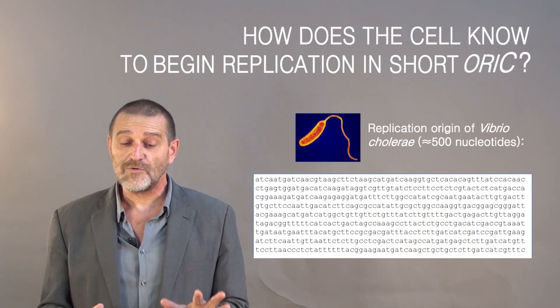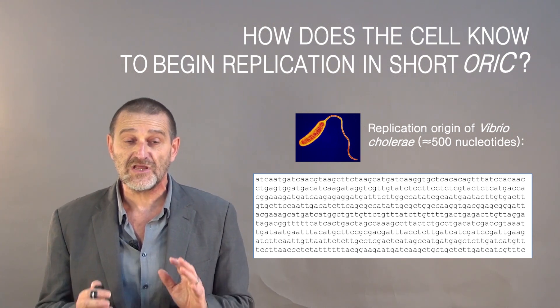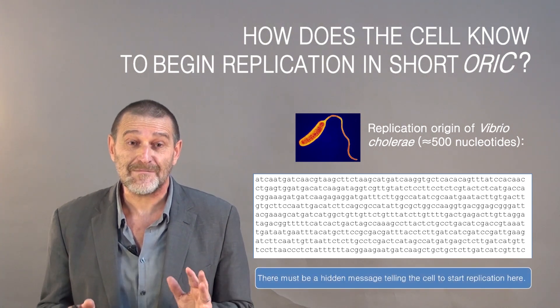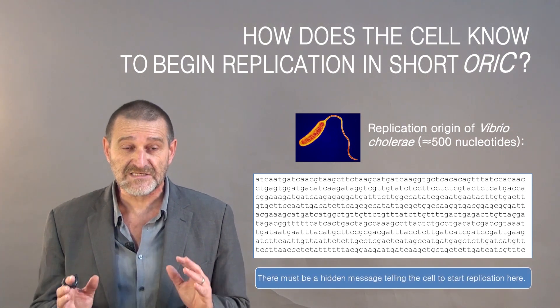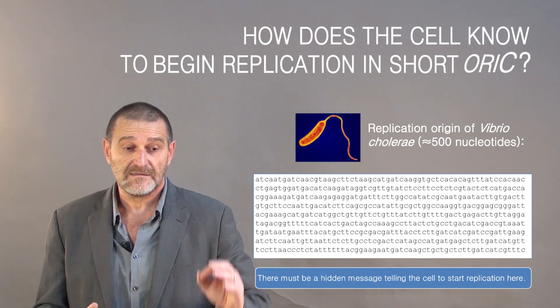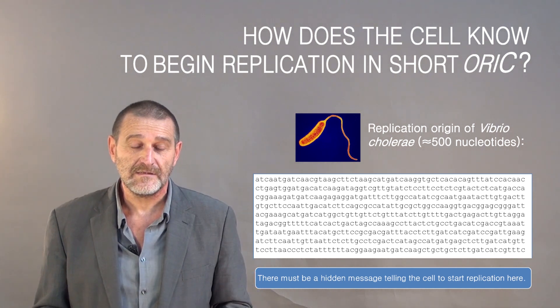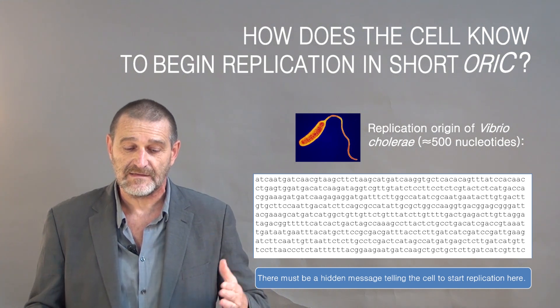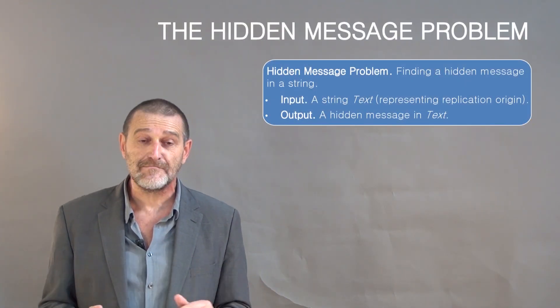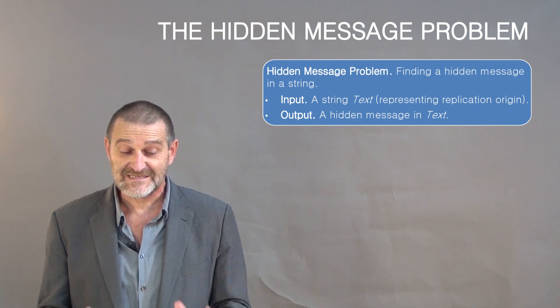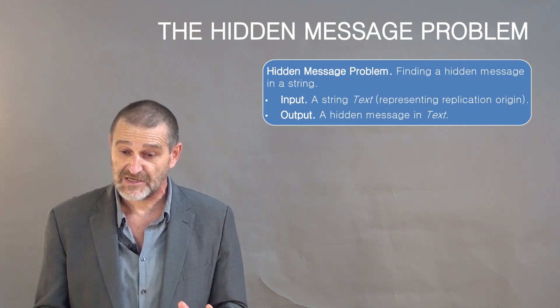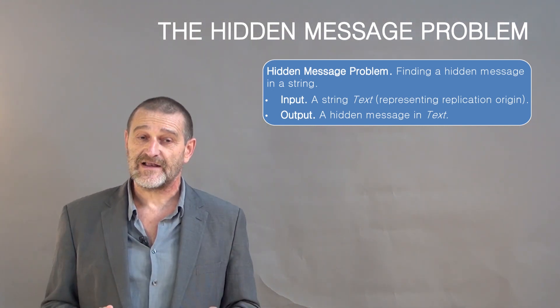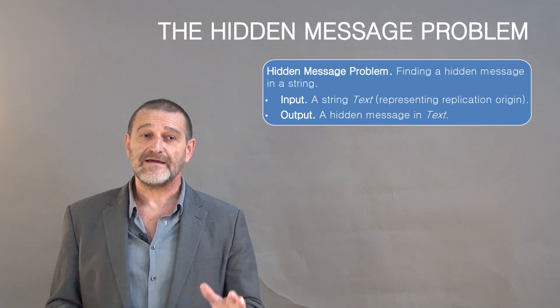Let's try to ask a question. How does the cell know to begin replication in a short oriC region? There must be some hidden messages in the genome that tell the cell, start replication right here. What are these hidden messages? But let's first try to formulate the problem right. So the right formulation will be the hidden message problem. In this case, input is a string text representing replication origin. And output is a hidden message in the text. Is this problem clear?